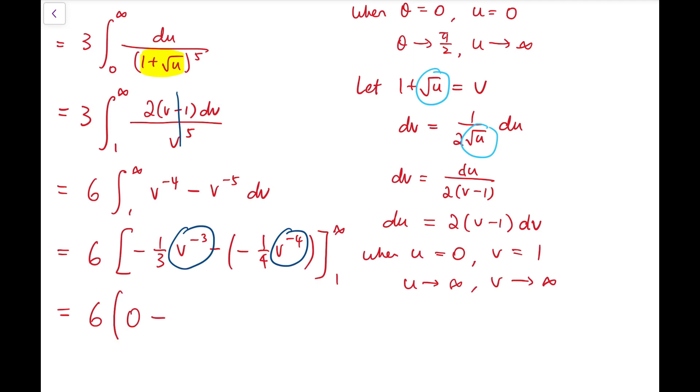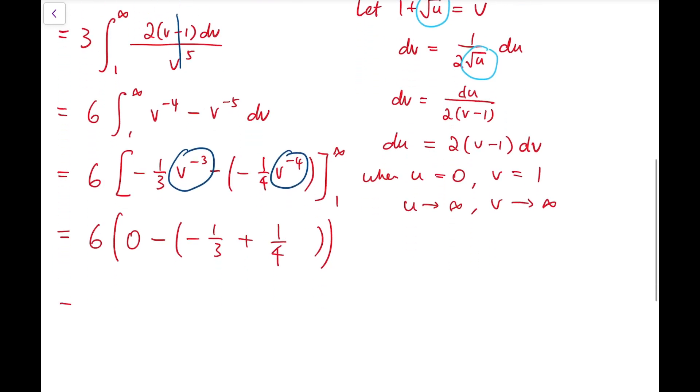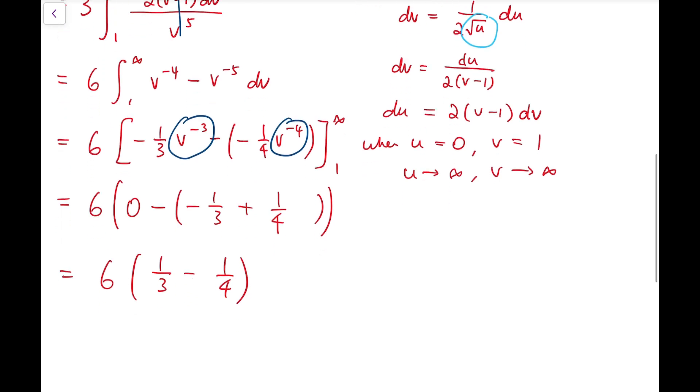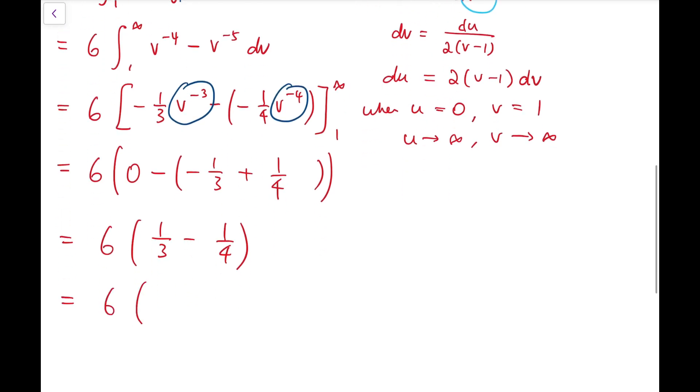And now, we subtract it by the value when we put v equals 1. So, it's minus 1/3, minus negative, which is plus, plus 1/4. So, simplifying, we have 6 times (1/3 - 1/4). And the fraction inside is actually 1/12. So, multiplying, we have 1/2 to be our final answer.